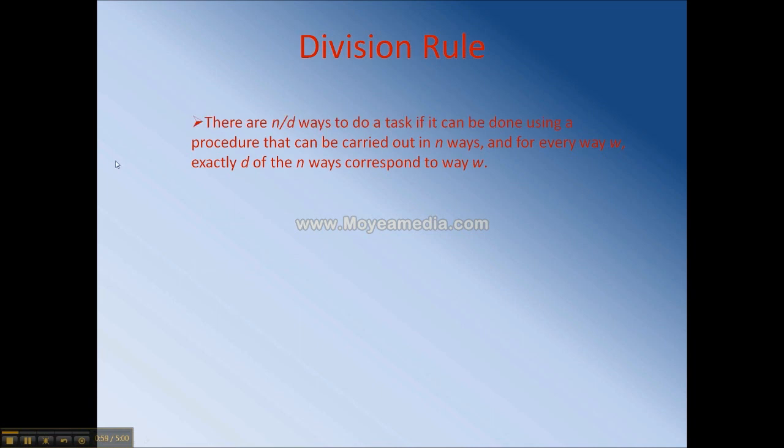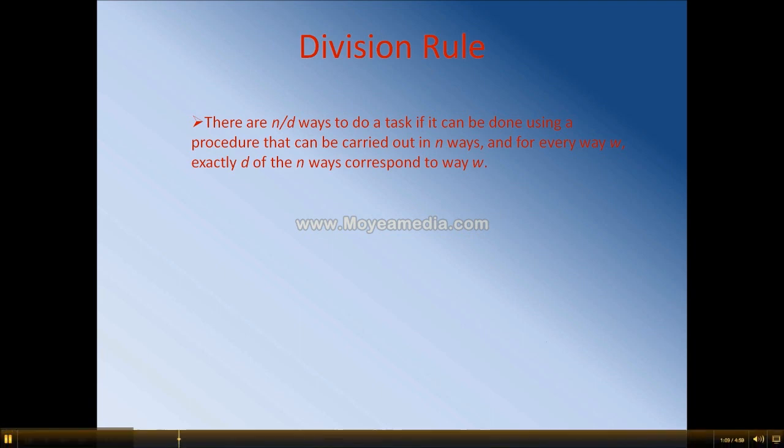The division rule states that there are n over d ways to do a task if it can be done using a procedure that can be carried out in n ways and for every way w, exactly d of the n ways correspond to way w.